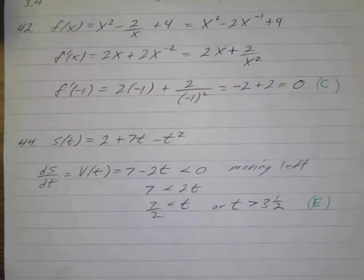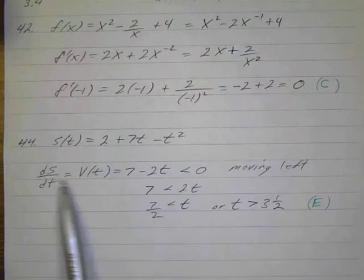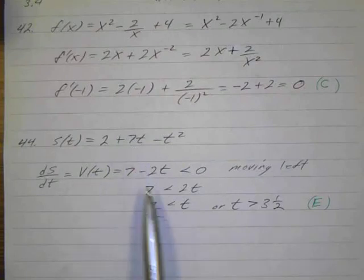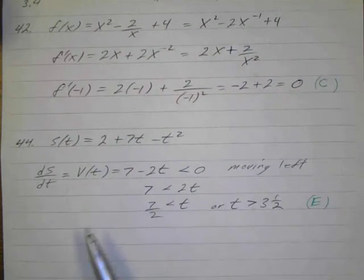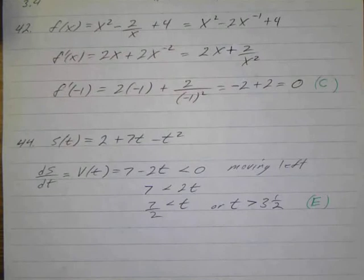It says which of the following times is the particle moving to the left? It would be moving to the left when the velocity is negative. So I just took the derivative to find the velocity, and the velocity was 7 minus 2t, and that's going to be moving to the left when it's negative. So I just said less than 0.